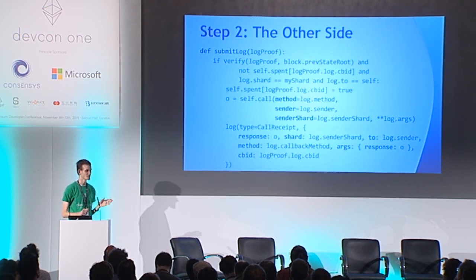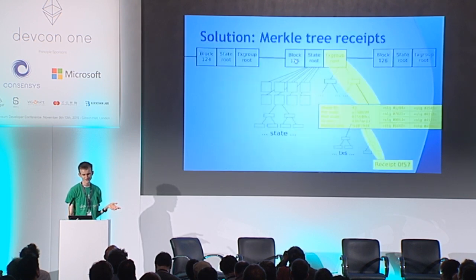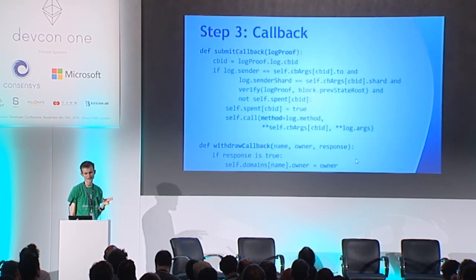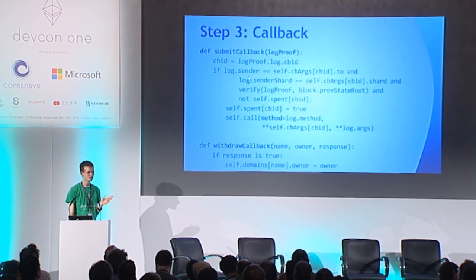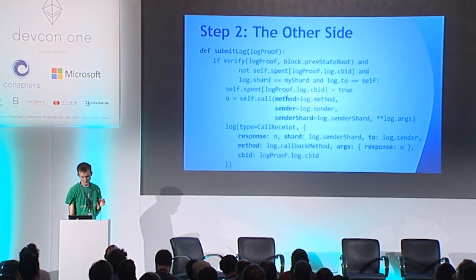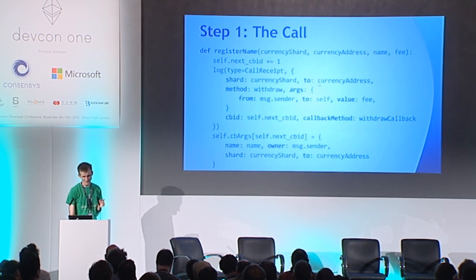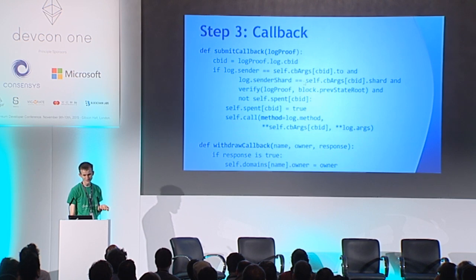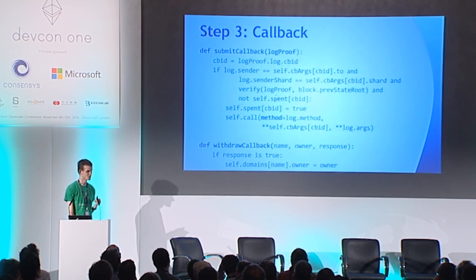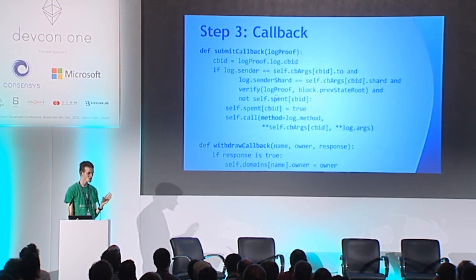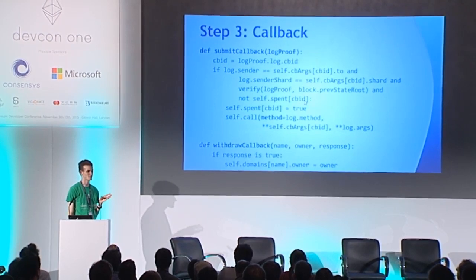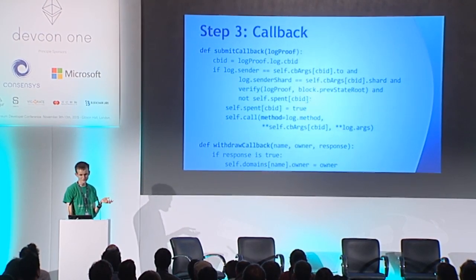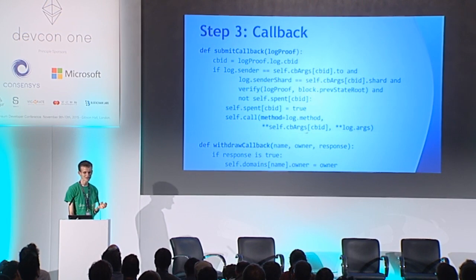What this transaction contains is just a log proof — a Merkle proof of the log that was created in step one. What the Gafcoin contract does is check the Merkle proof and verify that it is actually addressed to Gafcoin. It also verifies that this particular log has not yet been submitted. In shard 666, it maintains a record of whether this particular log callback ID has been spent, then sets spent to true and calls its own method.